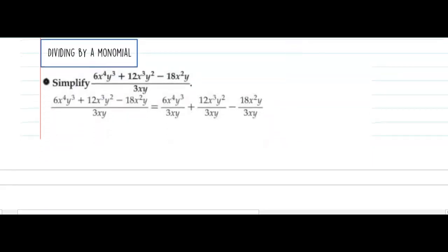Sometimes we see f of x over g of x expressed like this. And when we have a polynomial divided by a monomial, we can simplify it further. We can take each piece of the numerator and divide it by the denominator, and we're just going to simplify each piece.